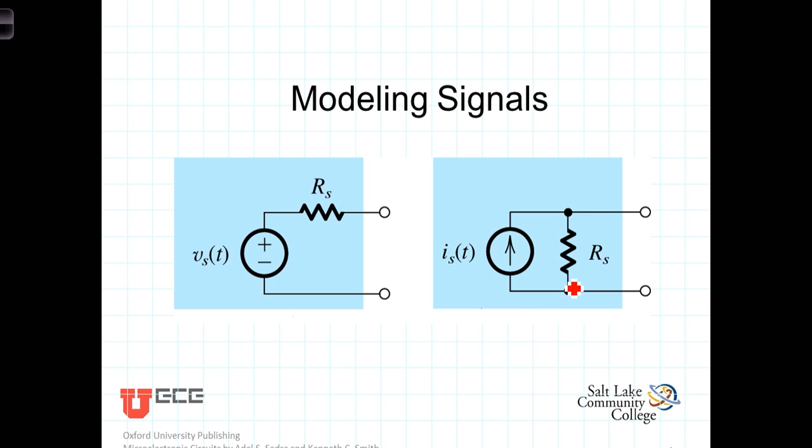Generally, we can model the signal with either a Thevenin or a Norton model. While any signal can be modeled as either a voltage or a current source, the Thevenin voltage model is frequently used when the source impedance is low. In fact, ideally the source resistance is zero, and the Norton model may be more useful when the source impedance is large, again ideally an infinite source impedance.